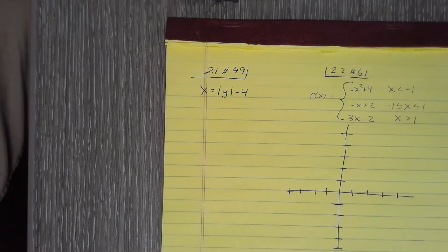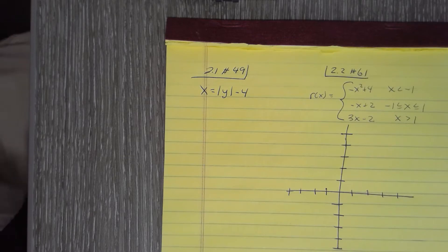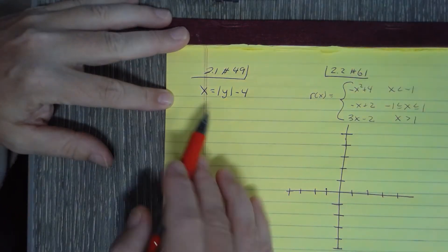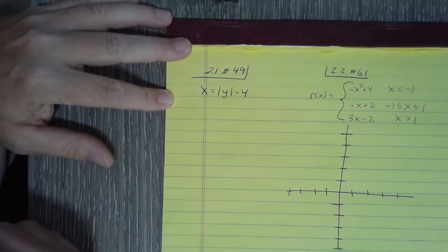Okay, we're doing Section 2.1 number 49. Here they're asking us to find the x and y intercepts and to graph this function. So x is equal to the absolute value of y minus 4.